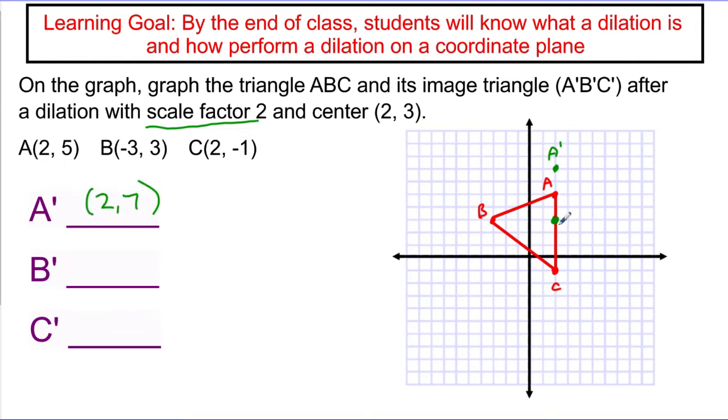That one's fairly straightforward because it's right on the same line. So I can do the same thing with C. If I go down 4 units, I end up at C. So I'm going to go down 4 again. A scale factor of 2 means do that thing twice. So I'm going to go down another 4, and I'm going to say my new C is down here.